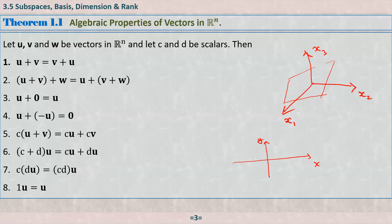If you pick two vectors on a plane through the origin and add them, you get another vector on that plane. If you subtract them, the result is again on the plane. So we say that, like R2, a plane through the origin is closed with respect to the operations of addition and scalar multiplication. Any calculation done with vectors in R2 can also be done in a plane through the origin.